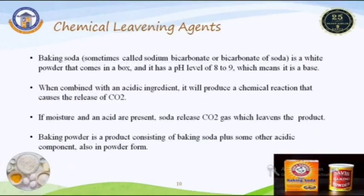Chemical leavening agents: There are two types present in the baking sector. The first is baking soda and the second is baking powder. Baking soda is also called sodium bicarbonate or bicarbonate of soda. It is white in color and powder in nature. Its pH level is eight to nine.